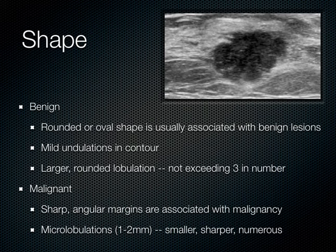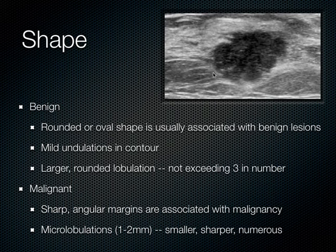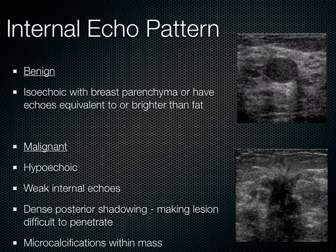Another characteristic is the shape of the mass. A benign mass is very round or sometimes oval, possibly with mild undulations or lobulations in its contour — usually no more than three large lobulations. With malignant masses, however, you get very sharp angulations and many micro-lobulations — small, less than two millimeters — which are multiple and sharp. If you see that pattern, it's more consistent with something malignant.